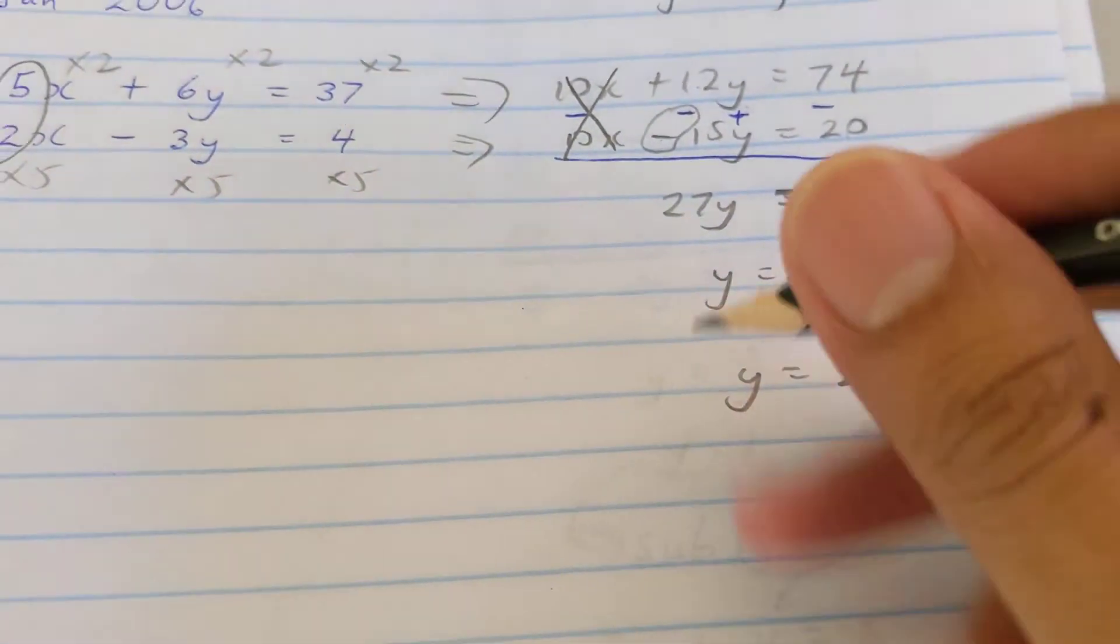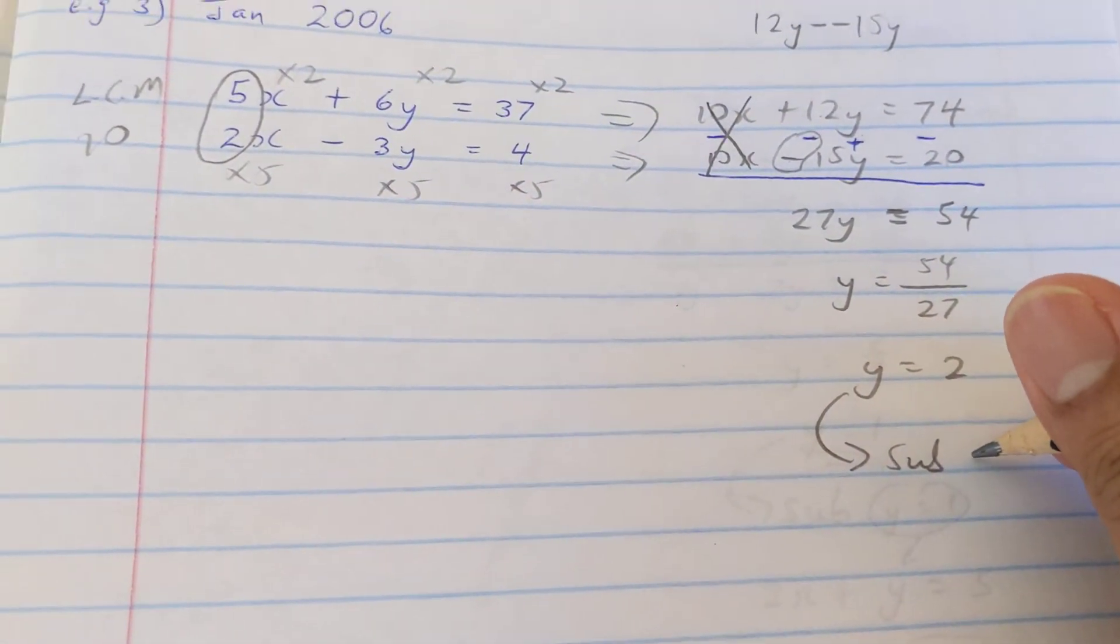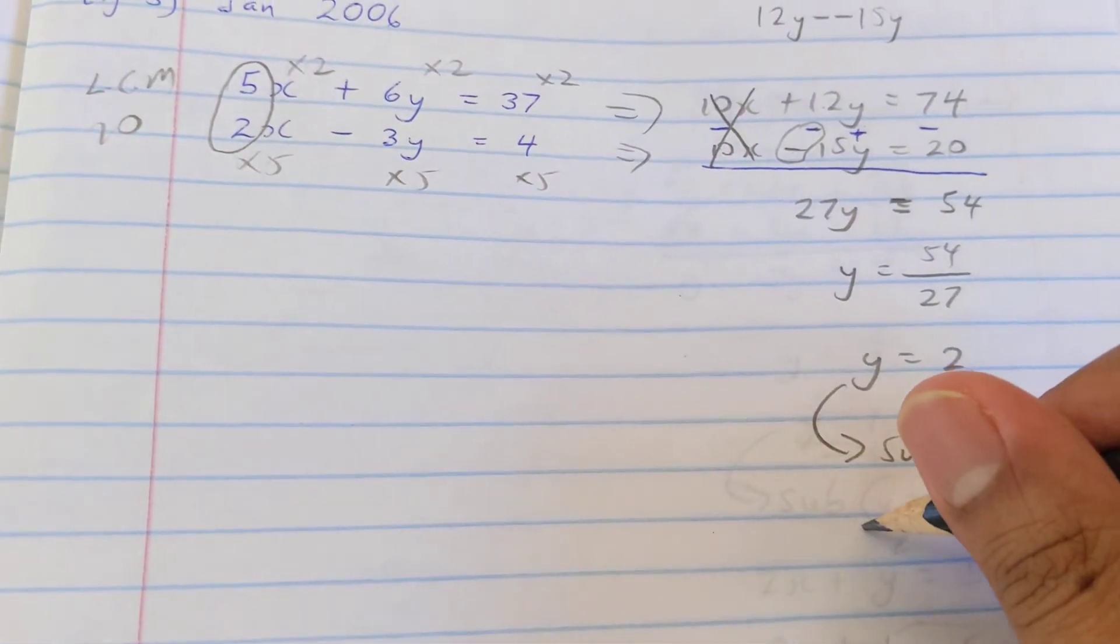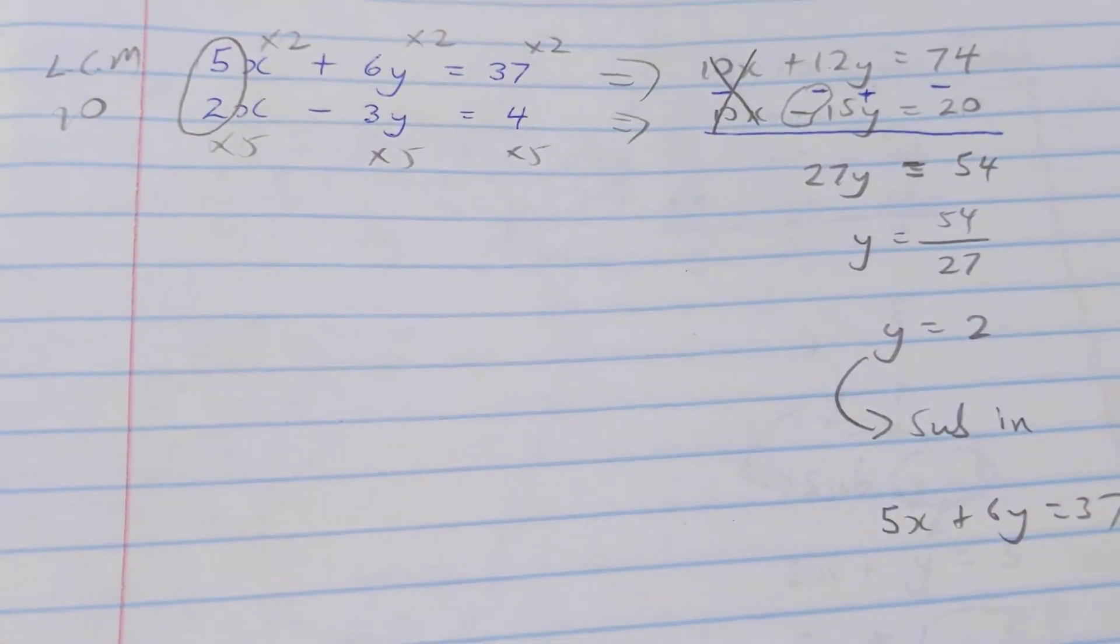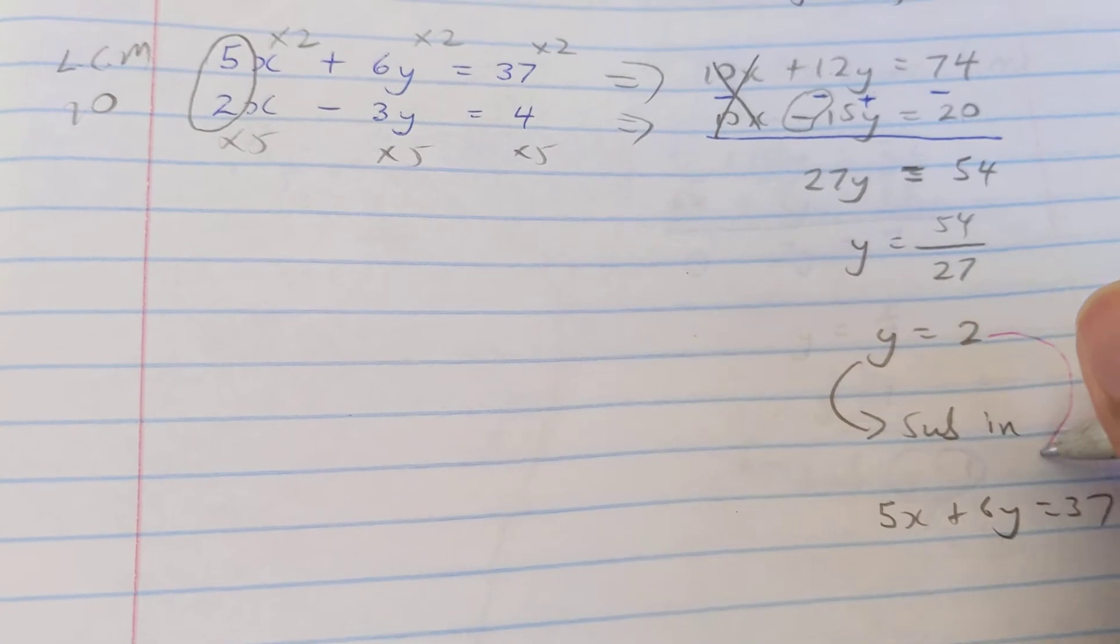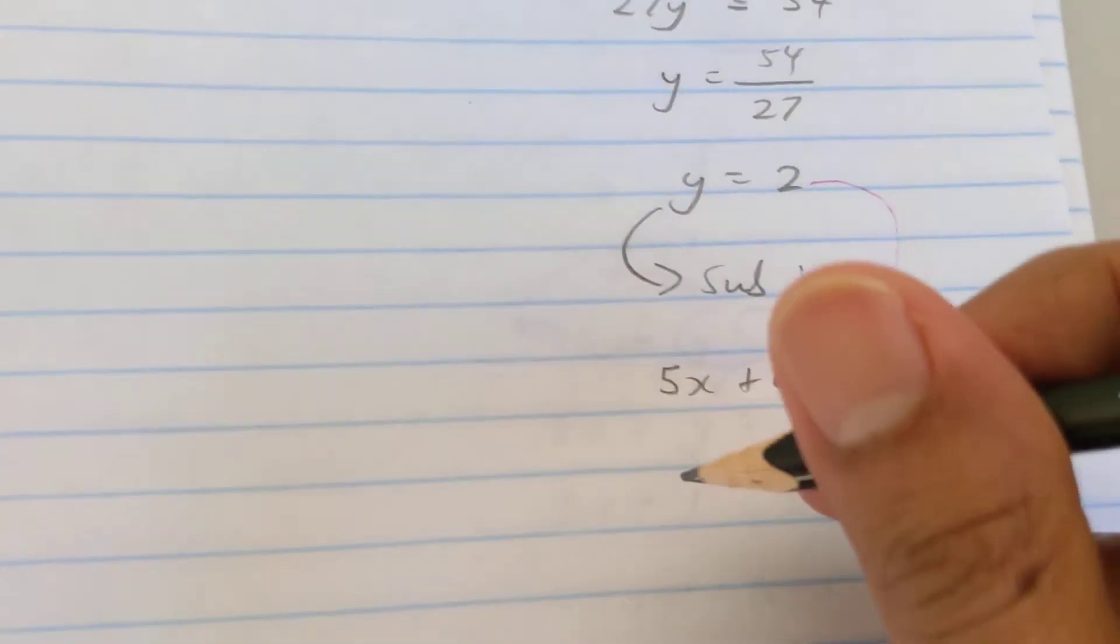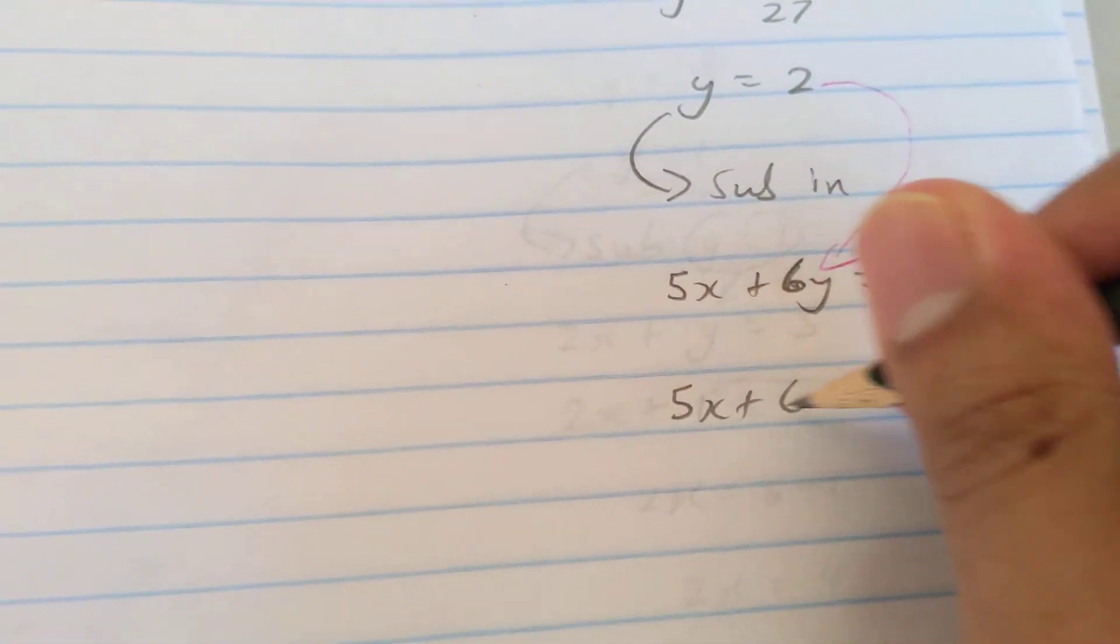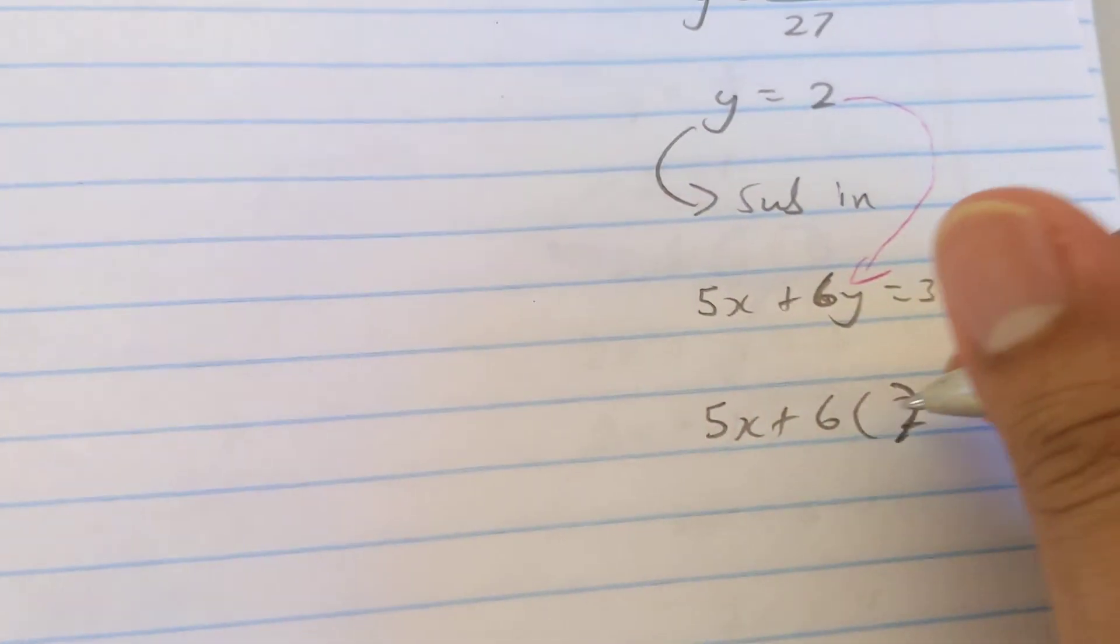So now that y equals 2, I just want to substitute it into whichever equation you want, it doesn't matter which one. I'm going to substitute it into the first one. So I have 5x plus 6y equal to 37, but I want to replace y with 2. So when I write my equation it's going to be 5x plus 6 times 2, because that's what you want to replace y with, all of that equal to 37.